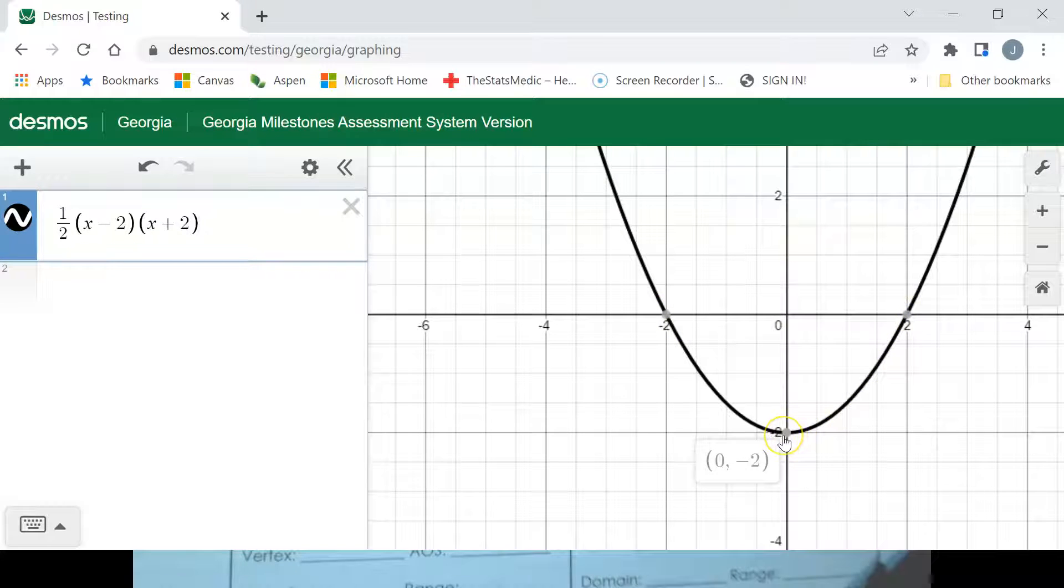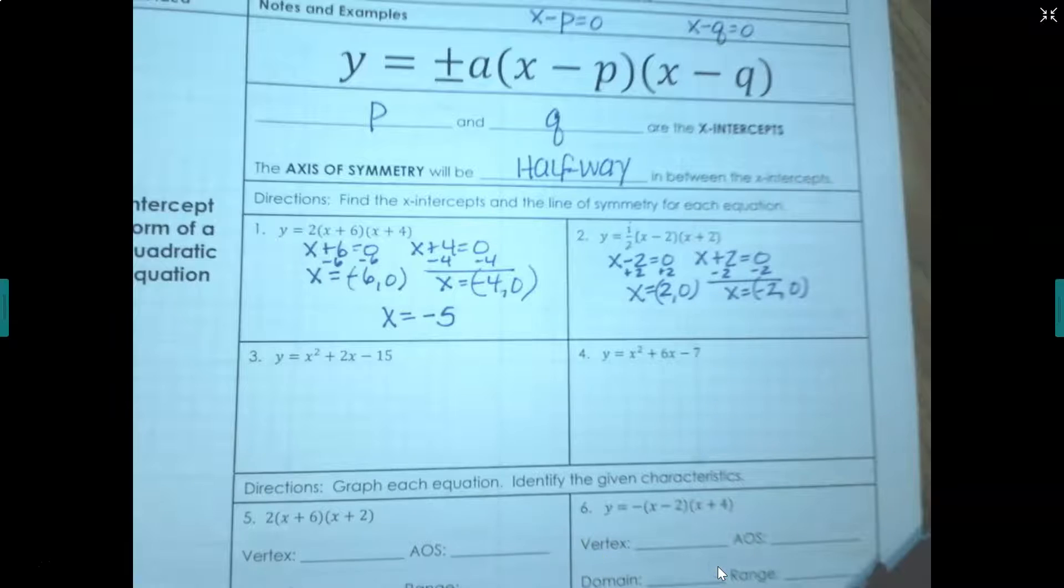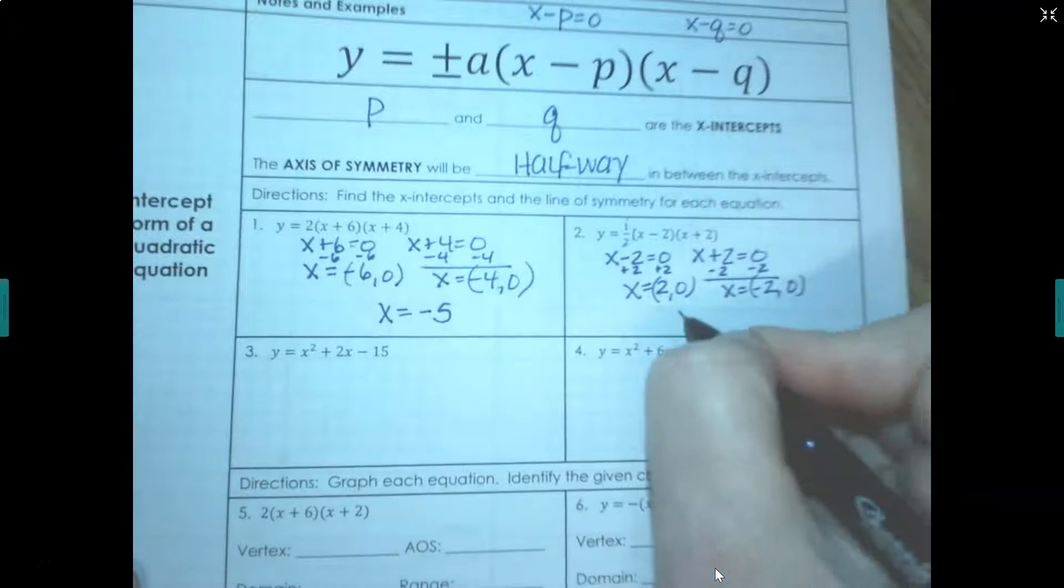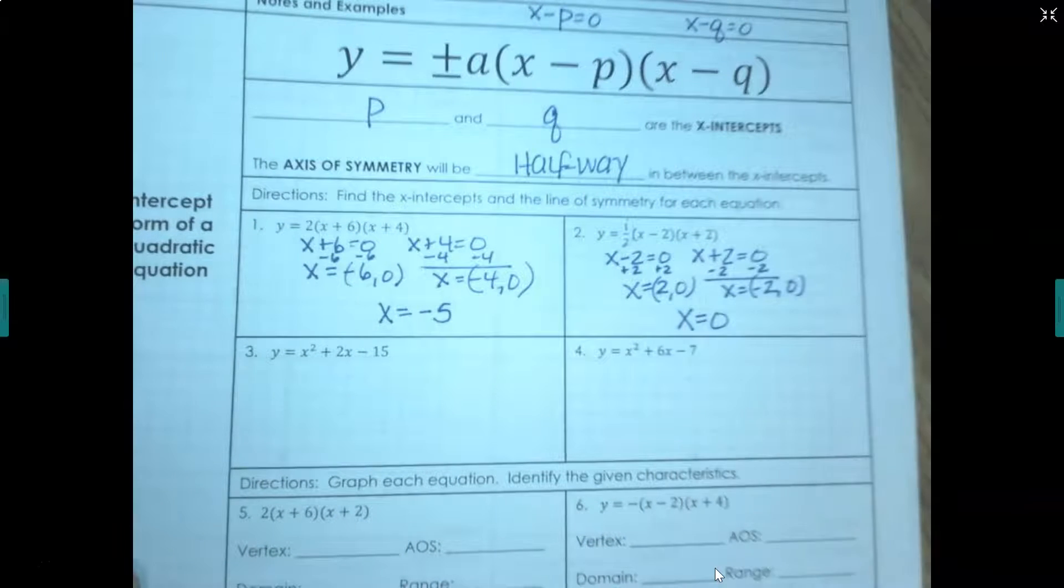Halfway between them is where our vertex is and our axis of symmetry. And our axis of symmetry, in this case, will be where x equals 0 because we've got to name the x value of the vertex. So our axis of symmetry would be x equals 0.